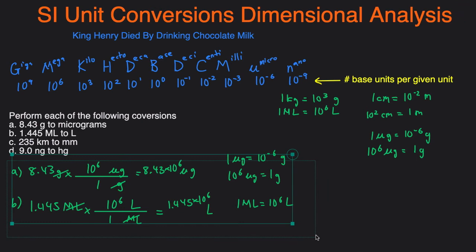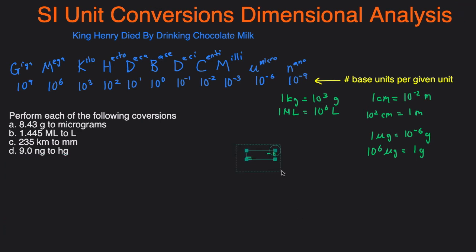Problem C: we're going from kilometers to millimeters — a non-base to non-base conversion, since the base unit here is meters. The convention is to first convert to the base unit, then convert to the other unit. So we'll do a two-step conversion: first kilometers to meters, then meters to millimeters.